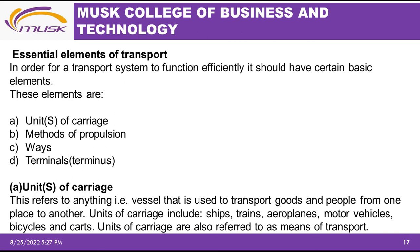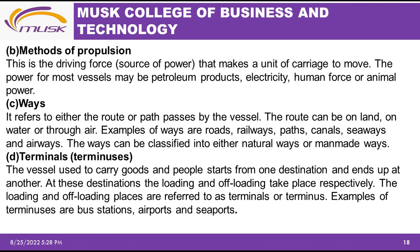Now we look at the essential elements of transport. There are four of them: units of carriage, methods of propulsion, ways, and terminals. Units of carriage refers to all forms of vessels used to transport goods and people from one place to another — examples include ships, trains, aeroplanes, motor vehicles, bicycles, and carts.